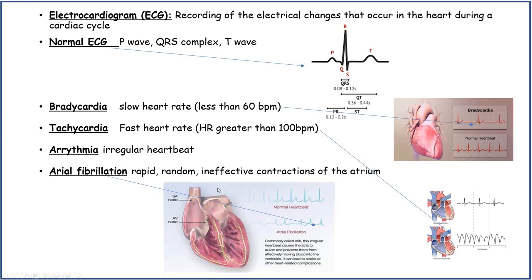An electrocardiogram, or ECG, is used for recording the electrical changes that occur in the heart during a cardiac cycle. A normal ECG wave shows a PQRS complex and the T wave — so you have the P, Q, R, S and T waves.